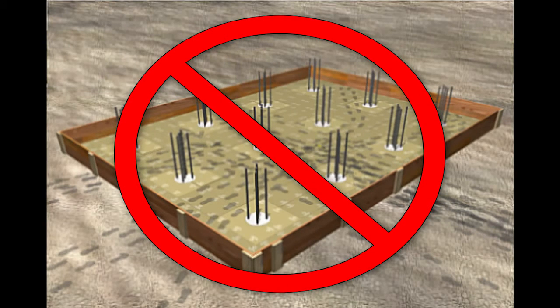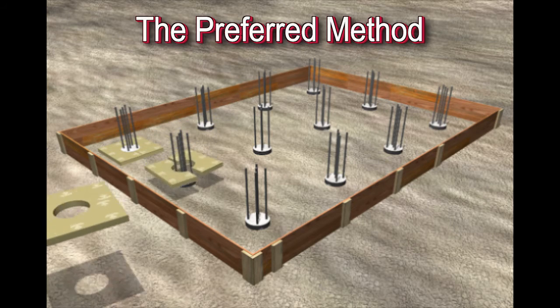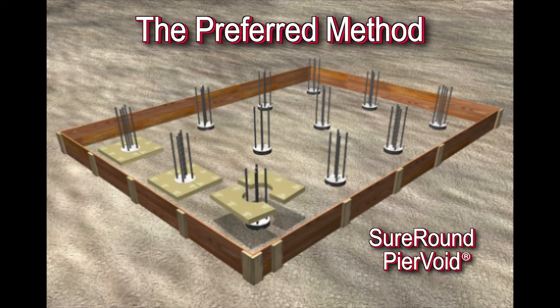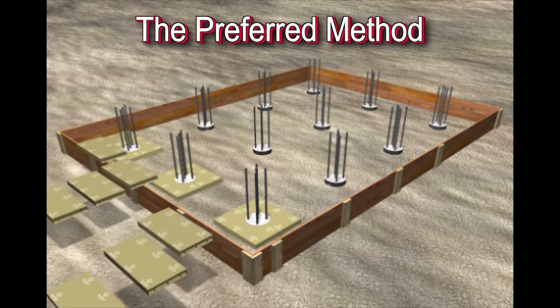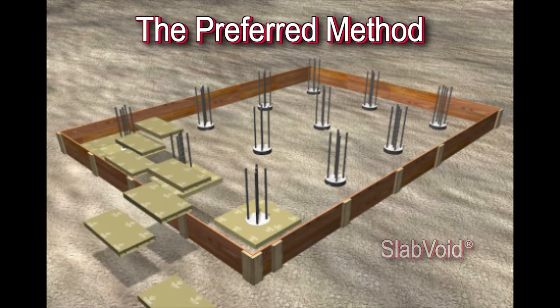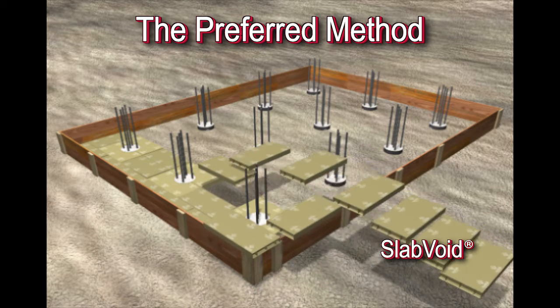STOP. Damage to the Slabvoid below can be avoided if procedures are mandated. The preferred method is to correctly position a few surround pier voids around the piers that are shown poured above the ground, then completely filling in the surrounding area with the standard pieces of Slabvoid including smaller pieces that are fitted into the odd areas.